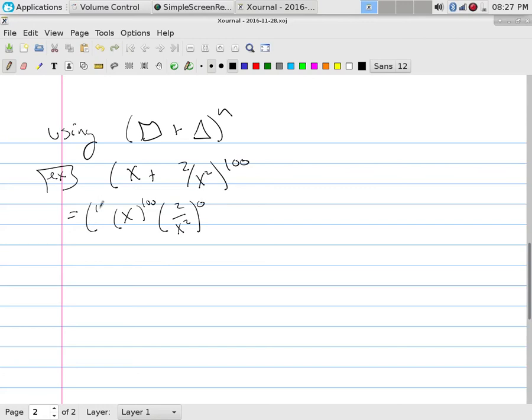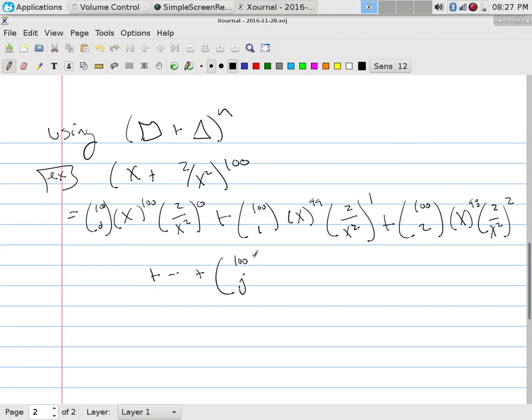this is going to be equal to x to the 100th and then 2 over x squared to the 0, and so this would be 100 choose 0, or this would be 100 choose 1 and then x to the 99th and then 2 over x squared to the 1st, and then plus 100 choose 2, x to the 98th and then 2 over x squared to the 2nd and we would go plus.